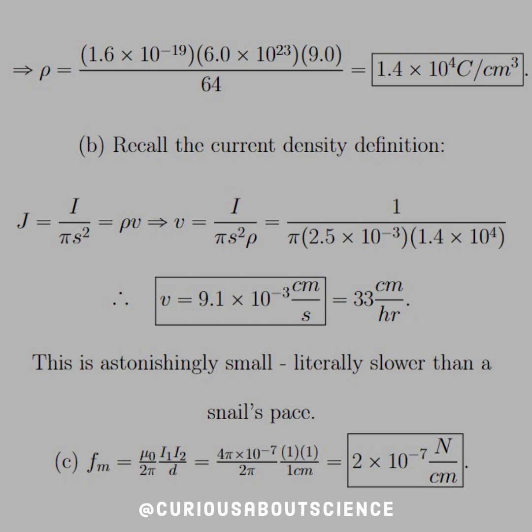Moving on to B, recall the current density definition, where J is equal to I over the area of a wire, which is pi s squared. And we know that that's equal to the density times the velocity, so we solve this for v.